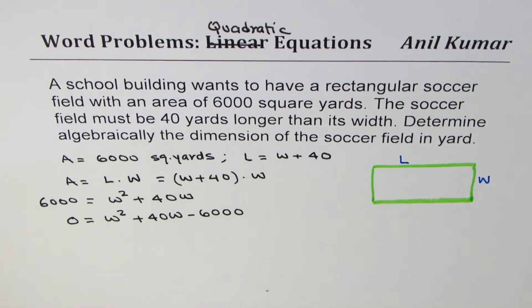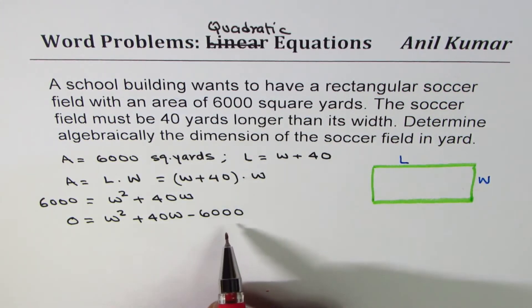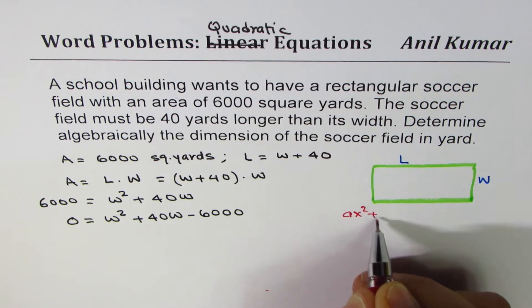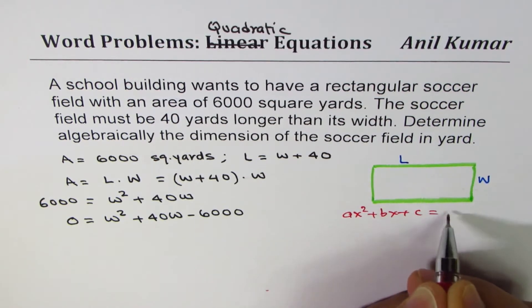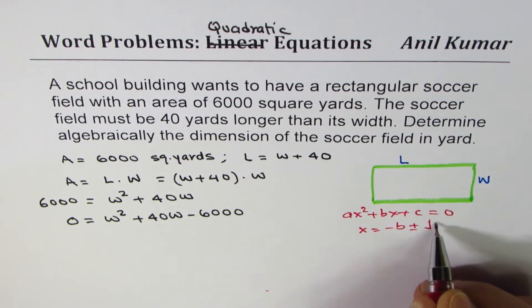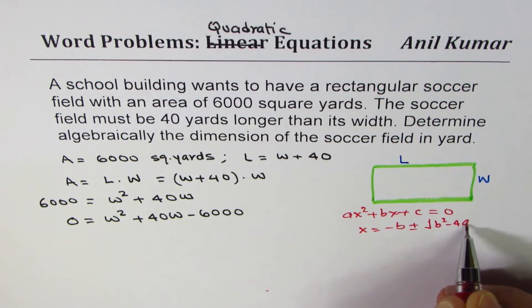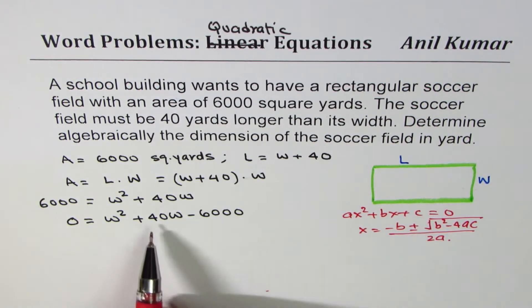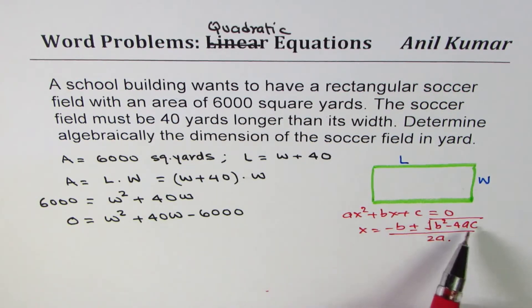Now this quadratic equation can be solved in a couple of ways. One is by factoring, the other one is quadratic formula. In general, if you have equation as ax² plus bx plus c equals to 0, then x equals minus b plus minus square root of b² minus 4ac divided by 2a. In our case, b is 40 and c is minus 6,000, a is 1.